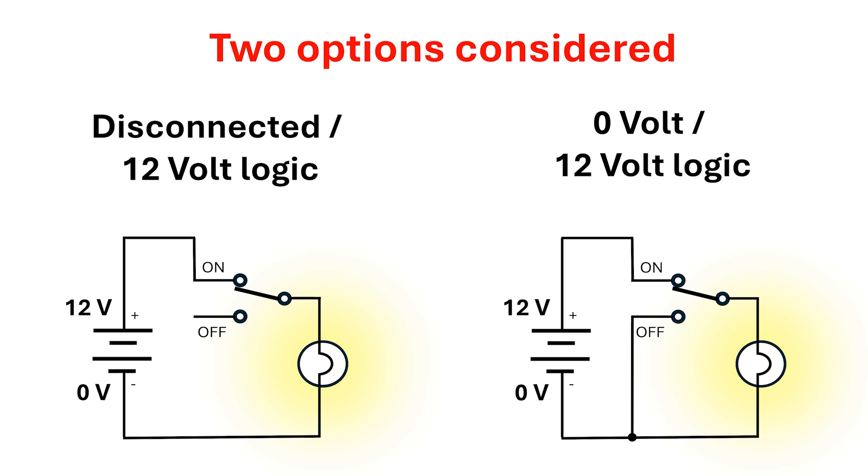When I was deciding what logic levels to use in this project, the two main options I considered were disconnected and 12-volt logic versus 0-volt and 12-volt logic. What's the difference? Well, here, the off state is literally disconnected, while here, it's connected to the 0-volt terminal on the battery. From our perspective so far, they're pretty similar.